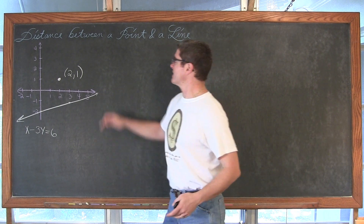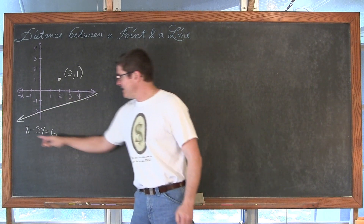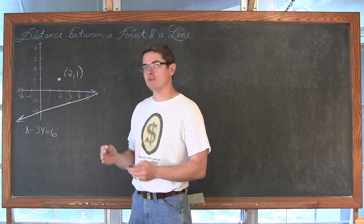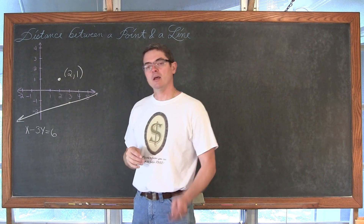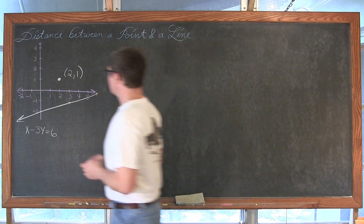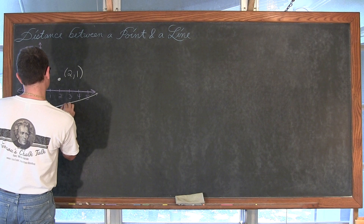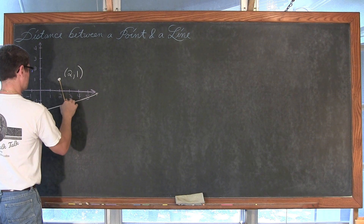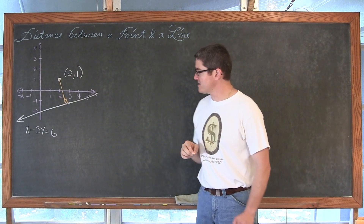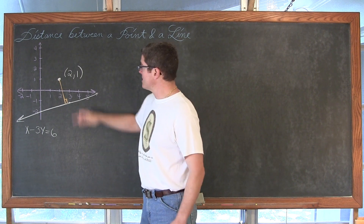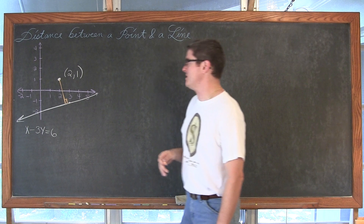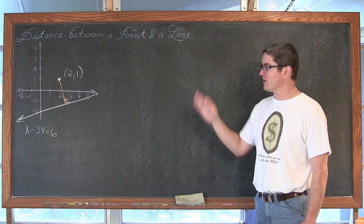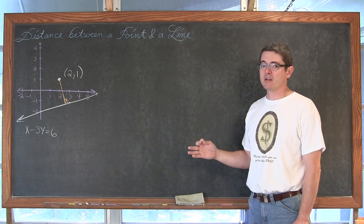Here we have a line with the equation x minus 3y equals 6, and a point in space which is (2, 1). I want to find how far that point is from this line. Again, we want to measure this in a perpendicular fashion. This time I am not going to just be able to look at the drawing and come up with the answer — it is going to take some algebra.